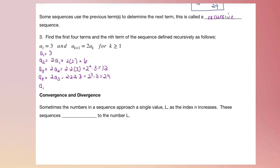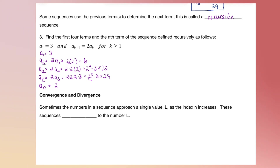For A sub n, looking at the pattern, we can define this non-recursively. Notice the powers of 2 keep increasing and we're always multiplying by 3. The power of 2 is always one less than the term number. So A sub n equals 2 to the (n minus 1) times 3.